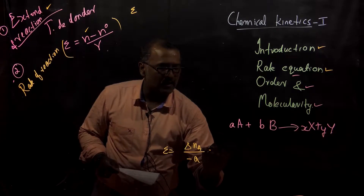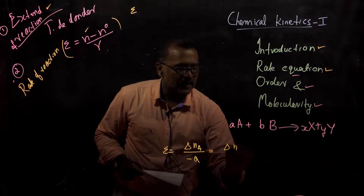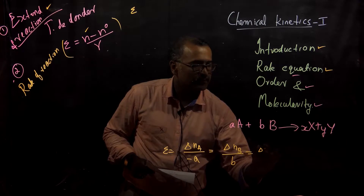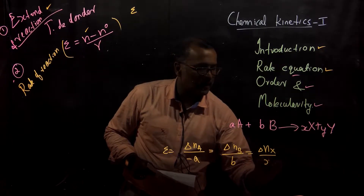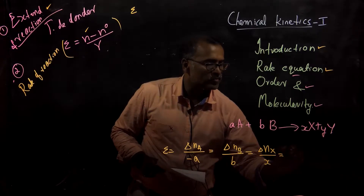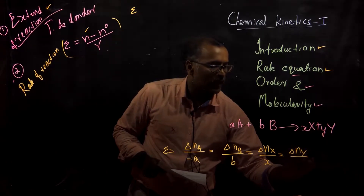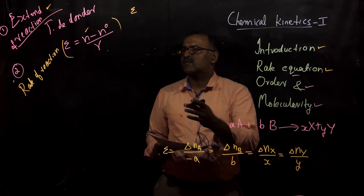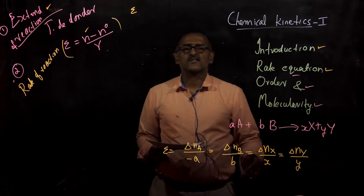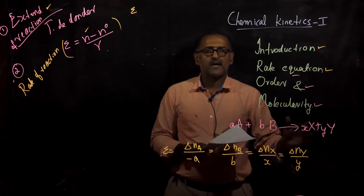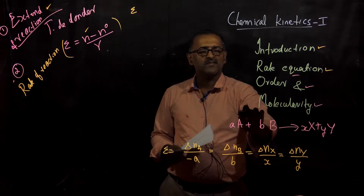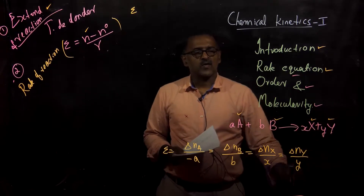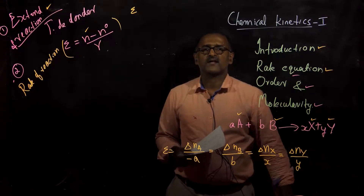So, delta NA divided by A is equal to delta NB divided by B, which will be equal to delta NX divided by X, which again will be equal to delta NY divided by Y. The most important aspect of the extent of reaction is that when you calculate it, it will be the same for all the participants. Here we have four participants: A and B as the reactants, and X and Y as the products. For all participants, the extent of reaction will be the same.